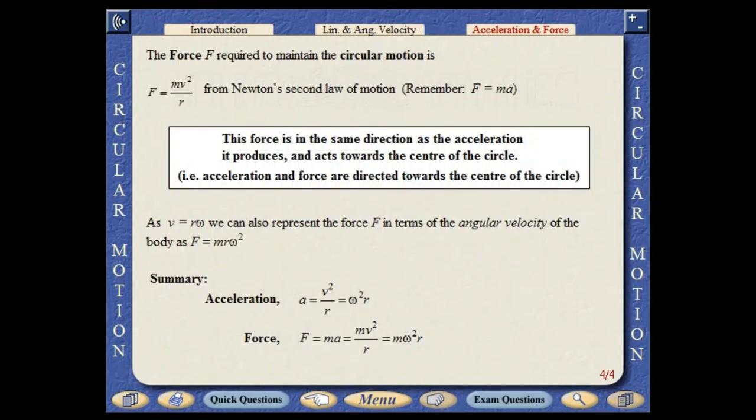The force f required to maintain the circular motion is found by using Newton's second law of motion. This force is in the same direction as the acceleration it produces and acts towards the centre of the circle. We can also represent the force in terms of the angular velocity of the body.